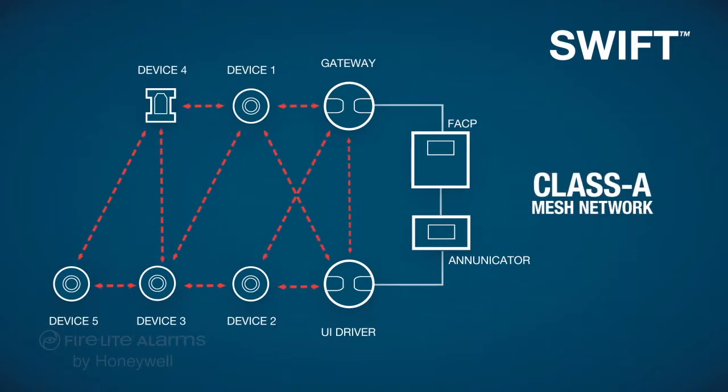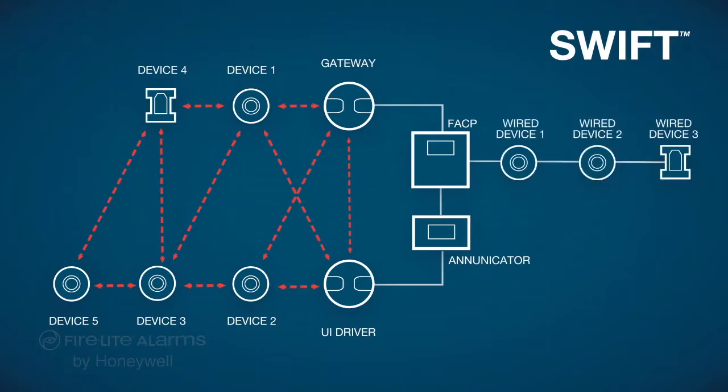SWIFT devices have bi-directional communications for reliable data transmissions while using frequency hopping to prevent system interference. Both wired and wireless devices can be present on the same fire alarm control panel providing an integrated solution for even more installation potential.